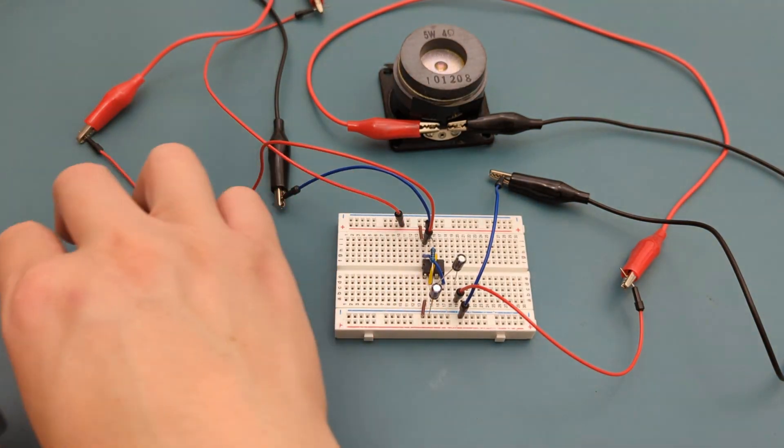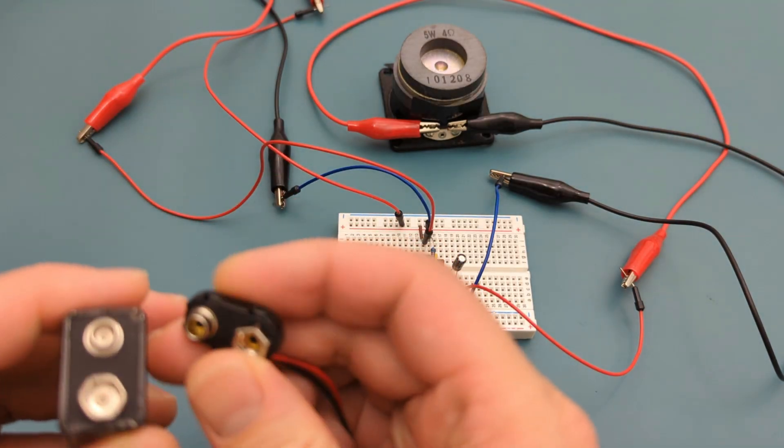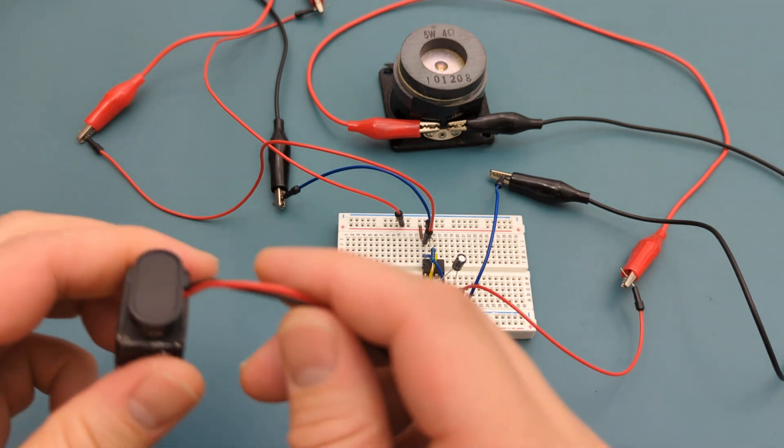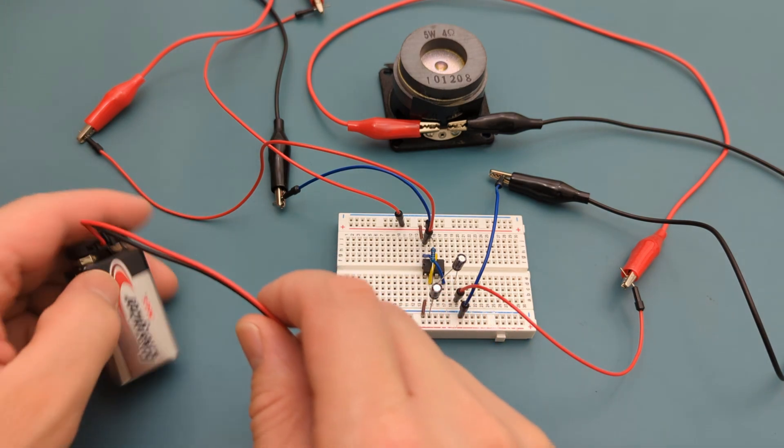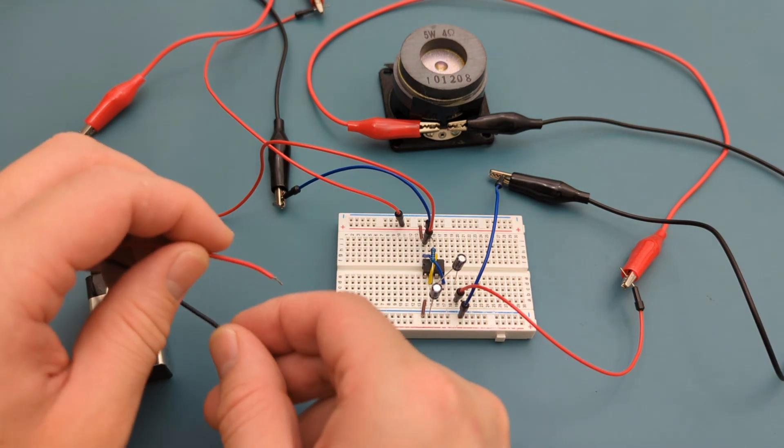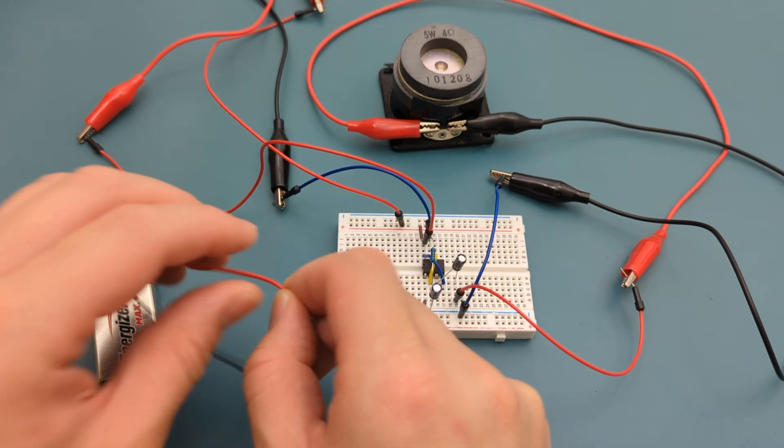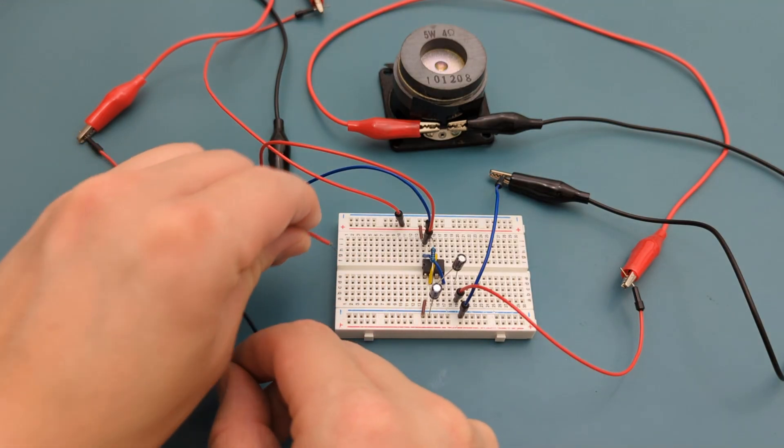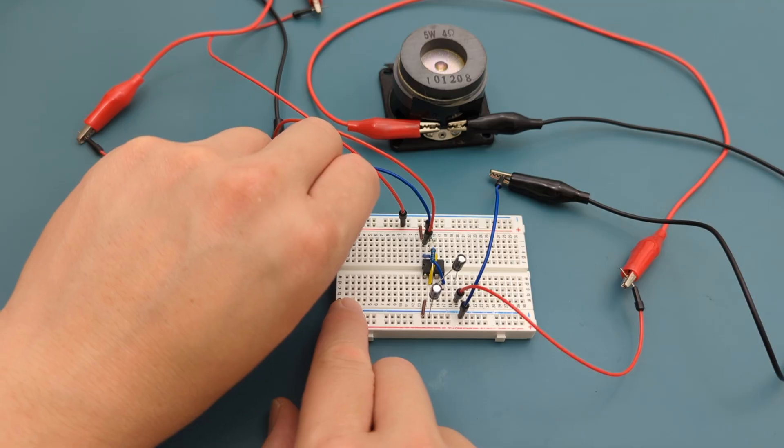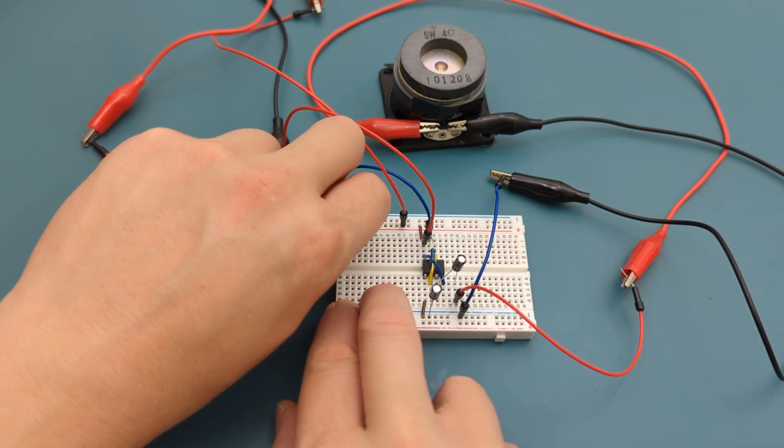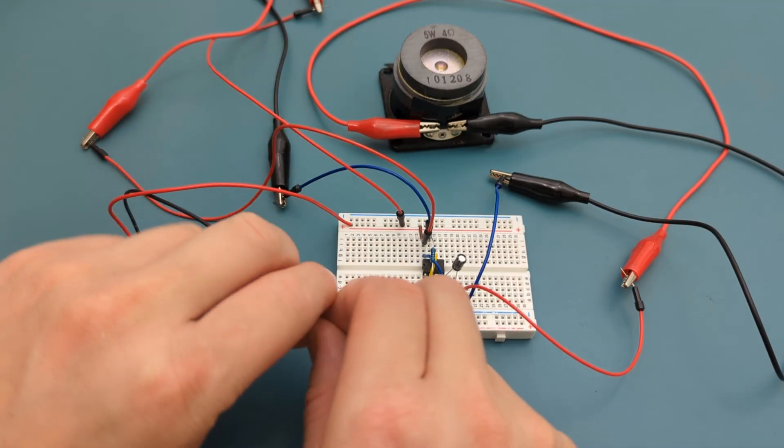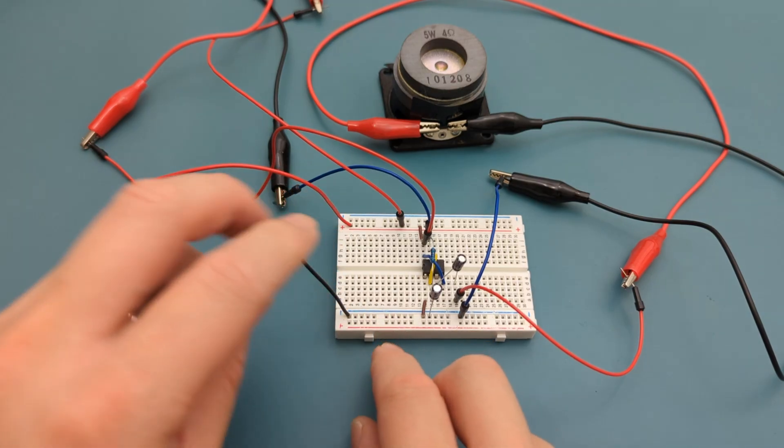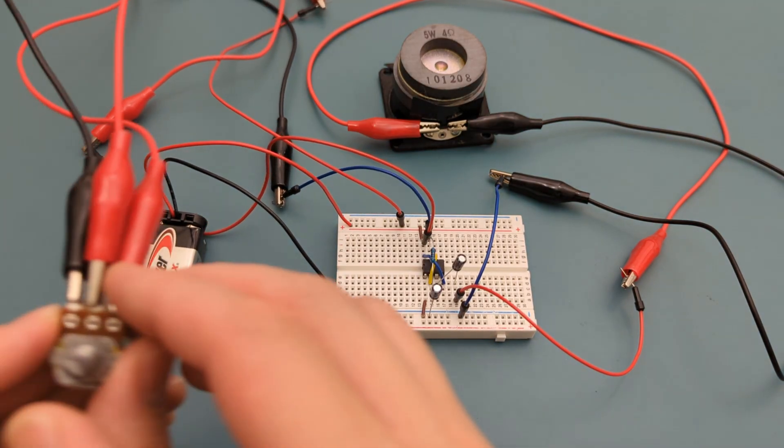Connect the 9V battery buckle connector to the 9V battery. It's time to connect the power supply. Insert the positive lead to the positive rail. Insert the negative lead to the negative rail. We have successfully completed the circuit.